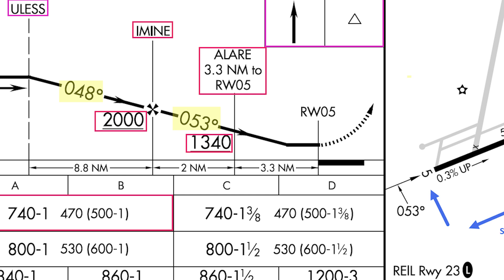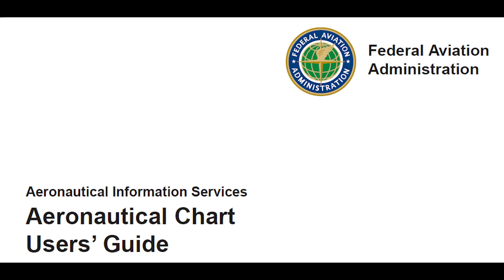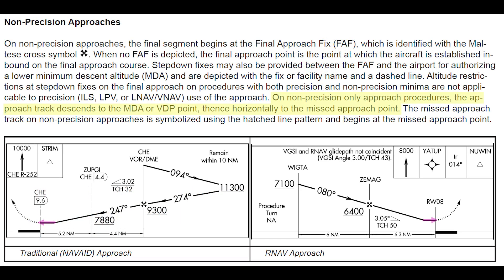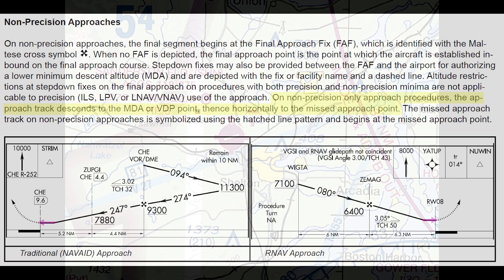Note that the descent path on the profile view levels out between ALARE and the missed approach point at the runway threshold. As the Aeronautical Chart User's Guide explains, on non-precision-only approach procedures, the approach track descends to the MDA or VDP point, thence horizontally to the missed approach point.